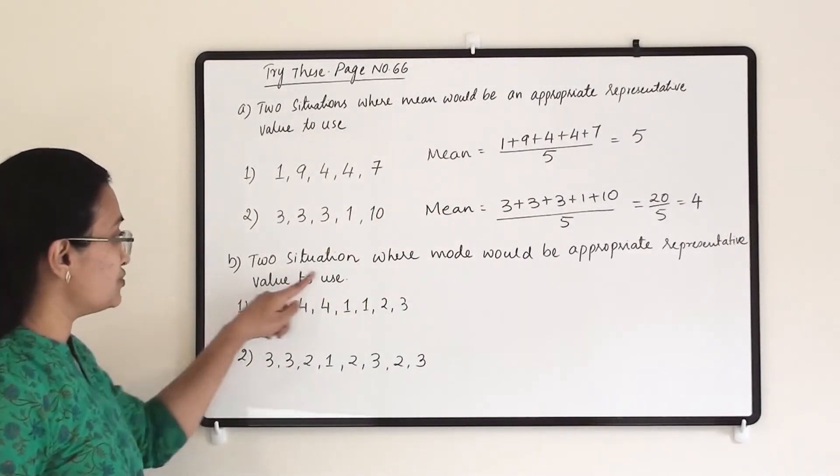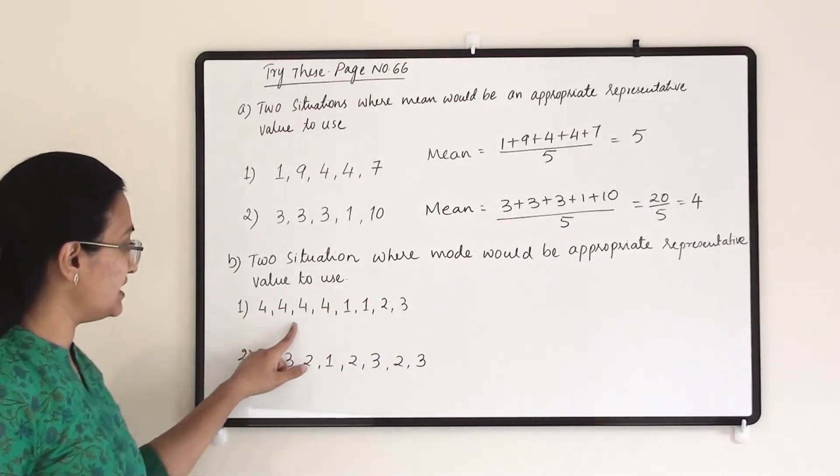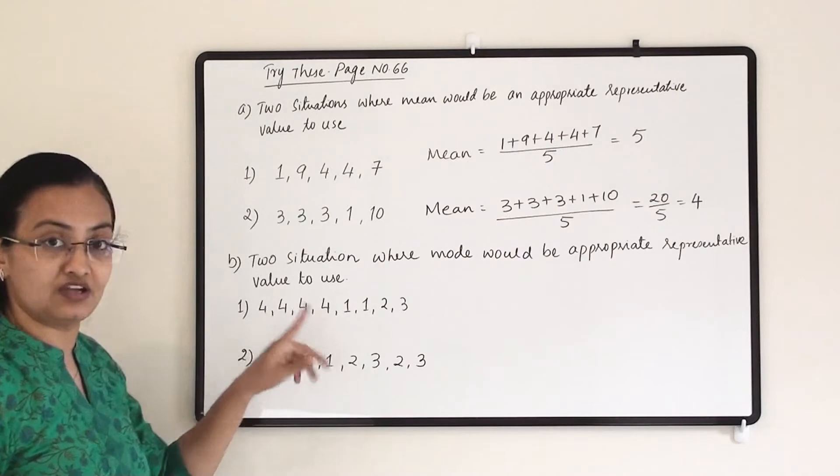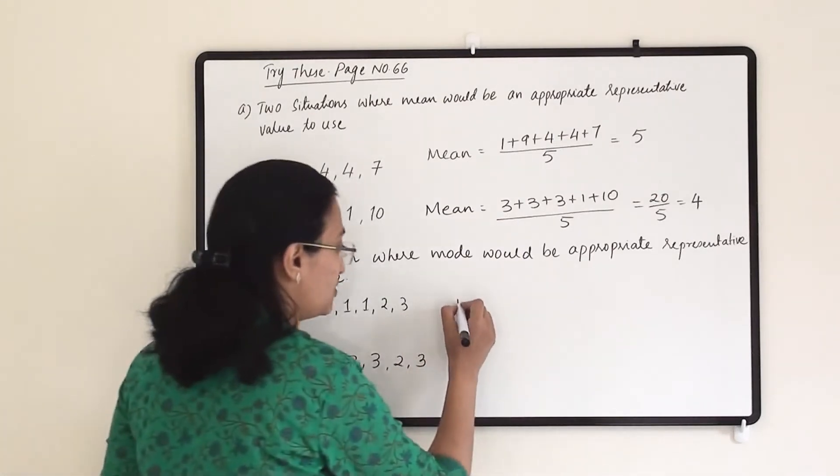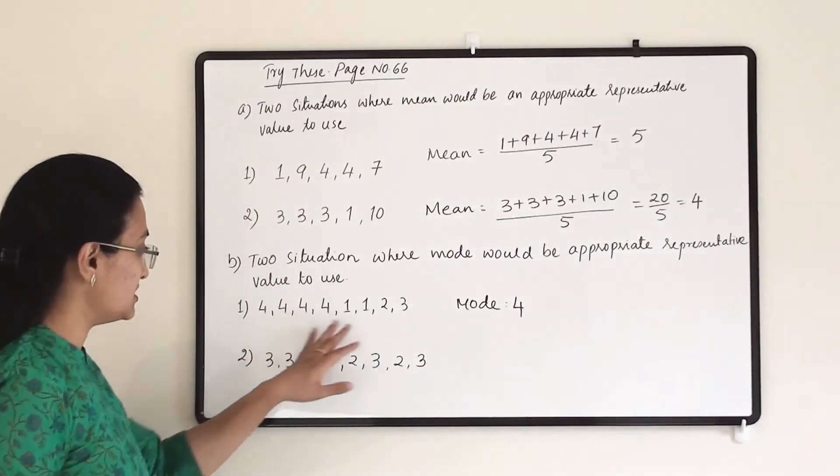Then we have to give two situations where mode would be appropriate. So if you see clearly that 4 is appearing 4 times, so mode is 4 and it will be the correct representative of all this data.